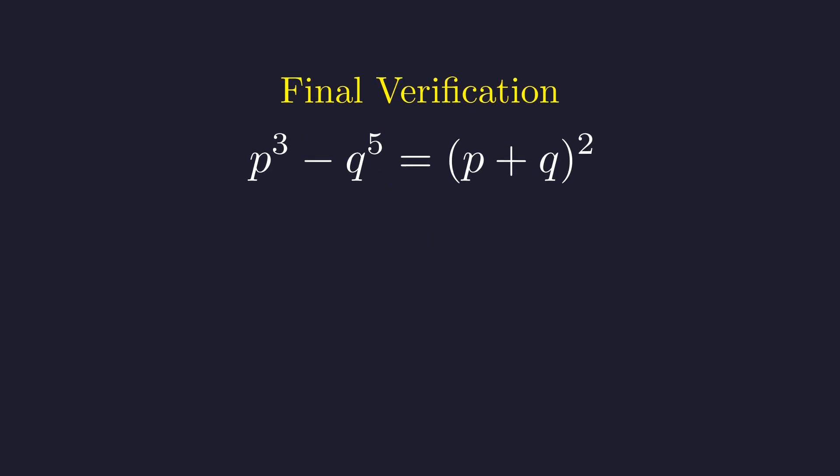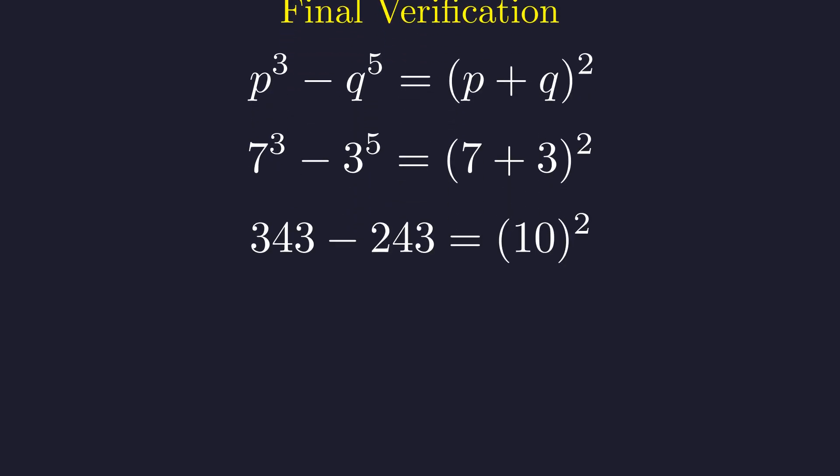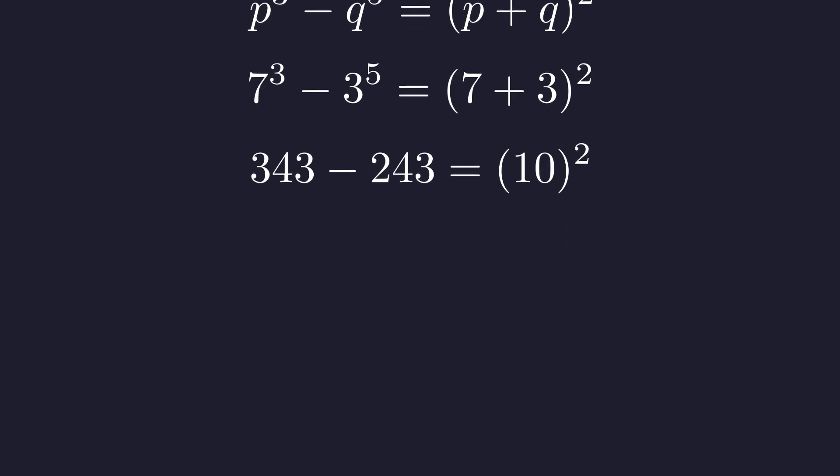Finally, we will verify this solution in the original equation. We will substitute p equals 7 and q equals 3 into the original equation. This gives 7 cubed minus 3 to the fifth on the left and 10 squared on the right. Evaluating the powers gives 343 minus 243 and 100. The equality holds. The solution is correct.